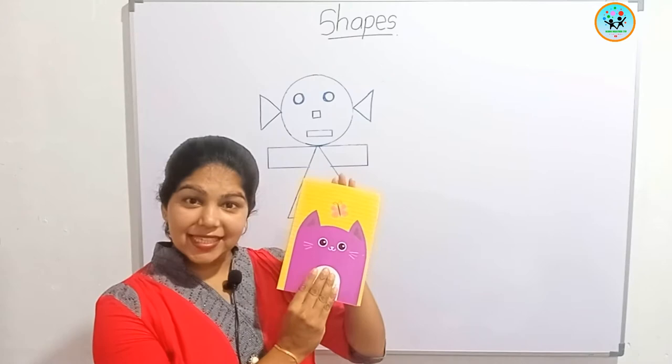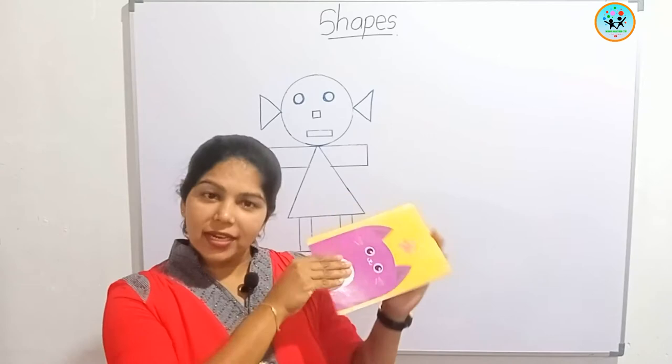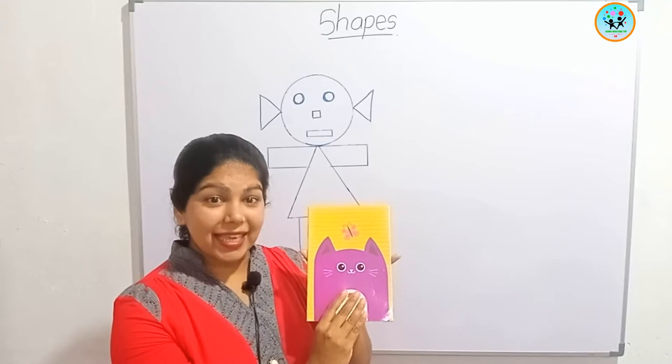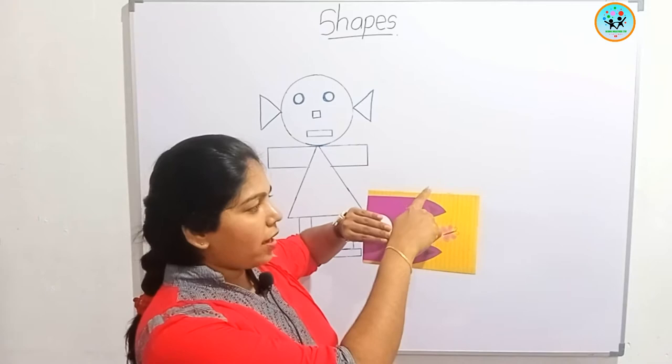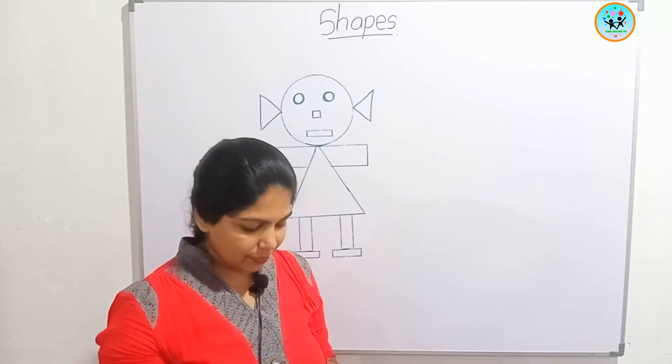What is this? This is a book. What is the shape of this book? Yes, it is a rectangle shape. How many sides are here? One, two, three, four — four sides are here.